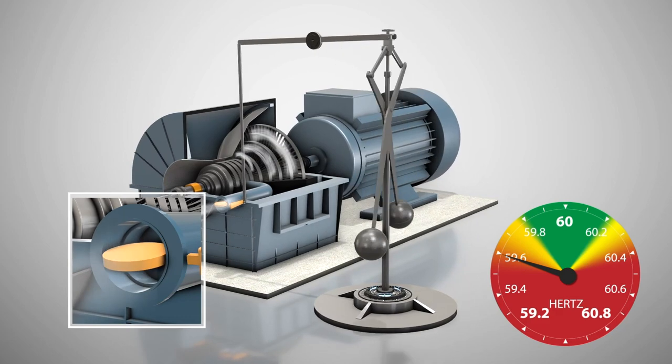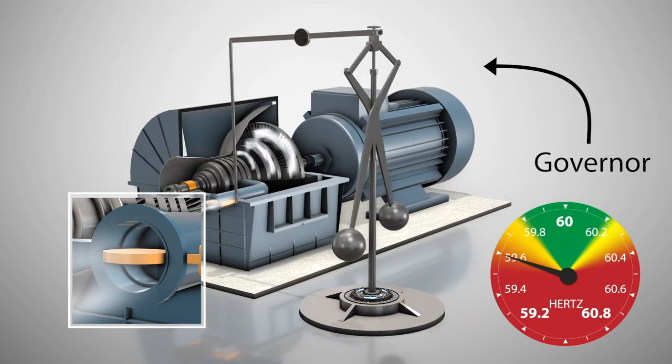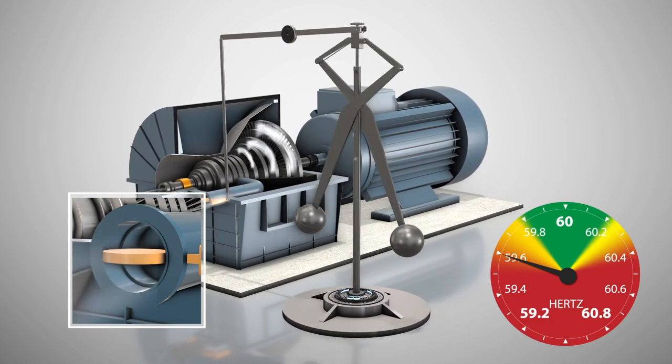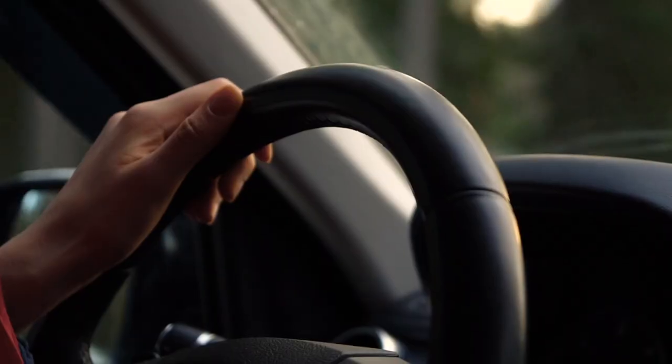Devices called governors, located on the generators, detect these changes in frequency. They measure how fast the generators are spinning and tell power plants to speed up or slow down. This is essentially the cruise control for the power grid.